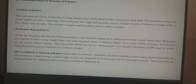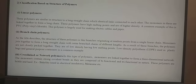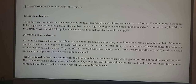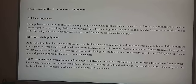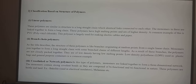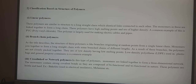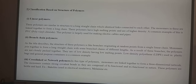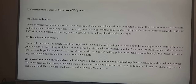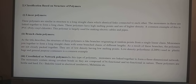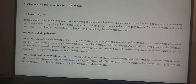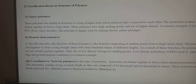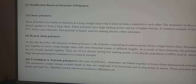The third category is cross-linked or network polymers. In this type of polymer, monomers are linked together to form a three-dimensional network. The monomers contain strong covalent bonds as they are bifunctional and tri-functional in nature. These polymers are brittle and hard. Examples include bakelite, melamine, urea formaldehyde resins, etc.